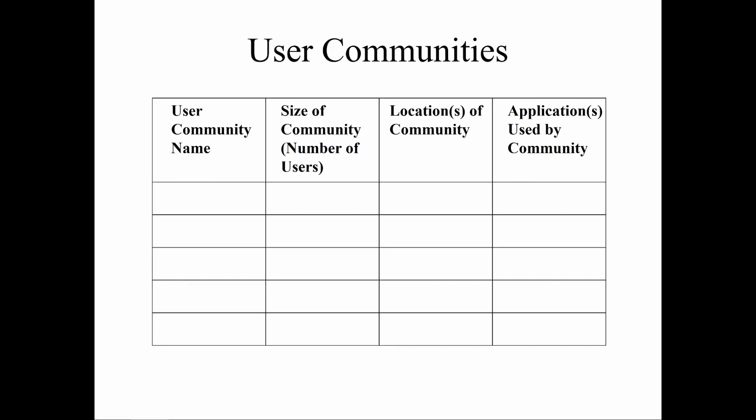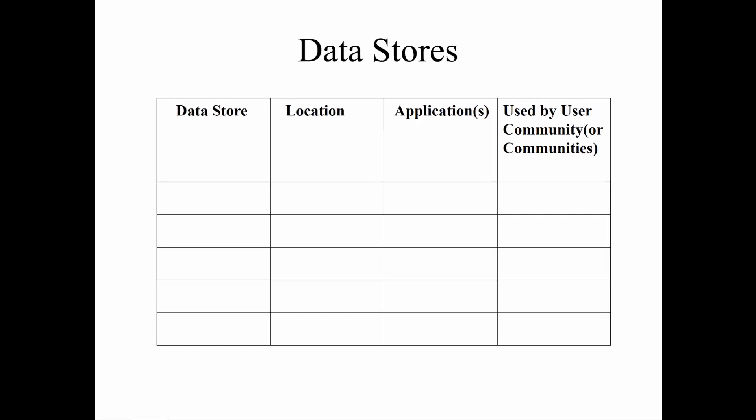User community is another big one — departments, groups, the size of them, locations, maybe applications, if they're sensitive or not. Data stores — what data stores are being accessed, what resources, location, what applications, things of that nature. As well as who's using them, because they're all kind of important. That gets you an overview of how the network flow is happening — general network flow, where traffic is going, things of that nature.